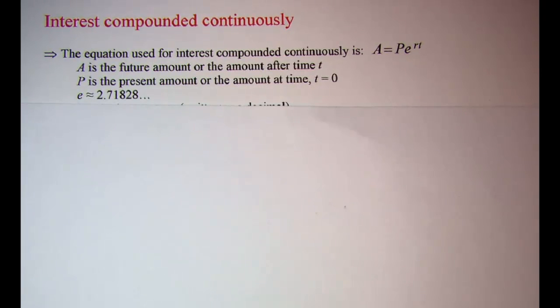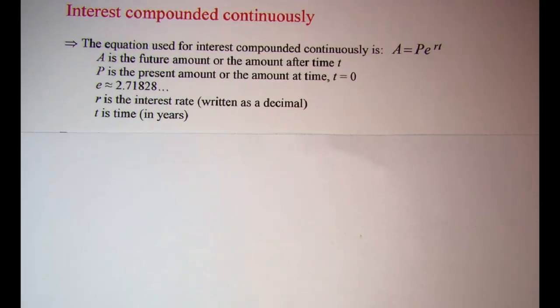The E is the irrational number 2.7182818, etc. R is the interest rate, needs to be written as a decimal. And then T is time in years.